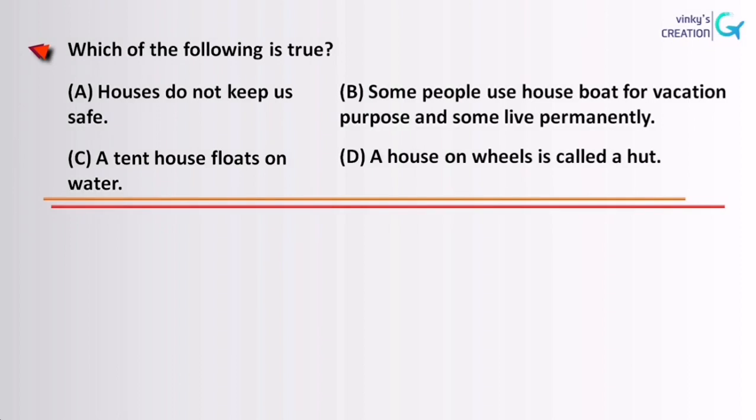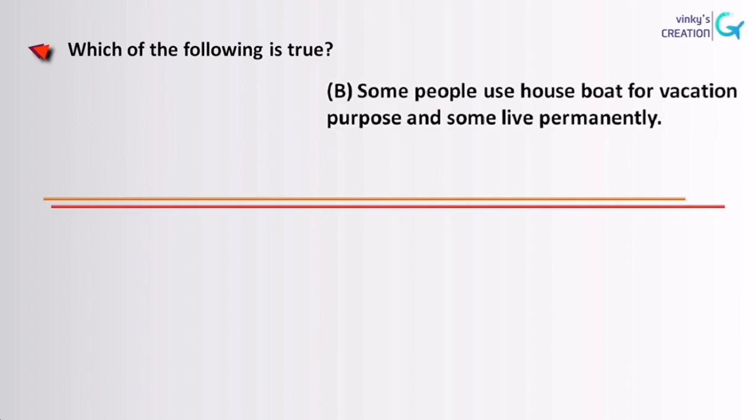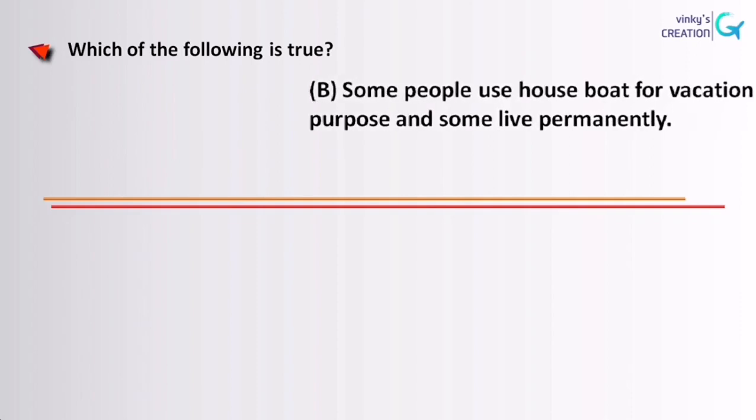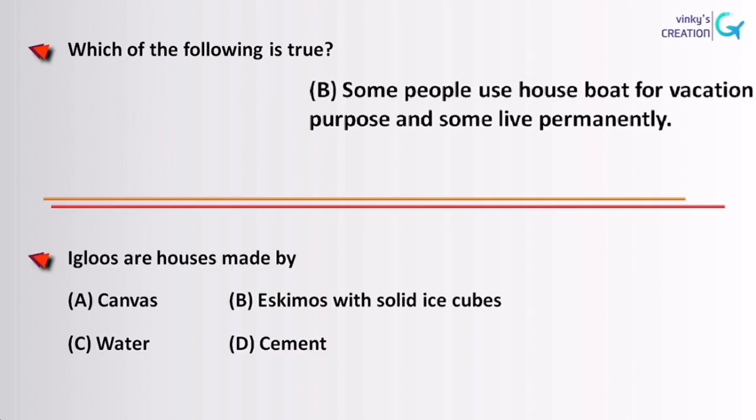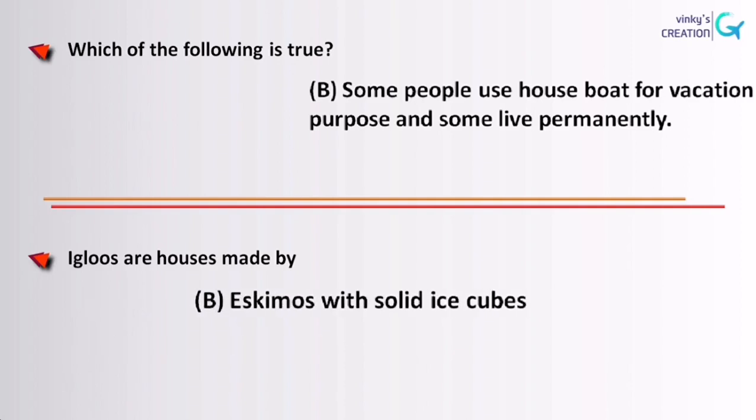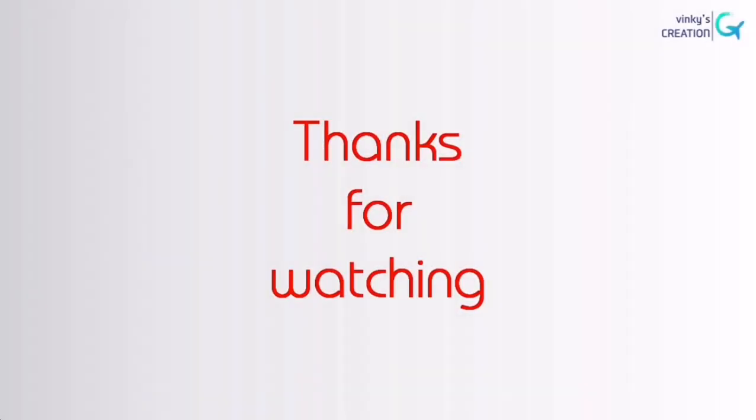Which of the following is true? Some people use houseboat for vacation purpose and some live permanently. Igloos are houses made by Eskimos with solid ice cubes. Thank you.